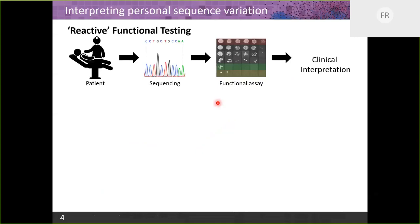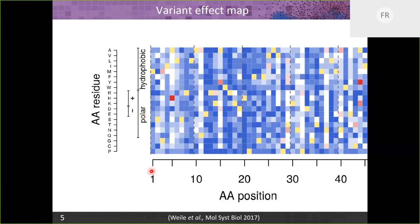The current paradigm is a patient comes into the clinic with a symptom, genetic testing is done, a variant is found, and then a functional assay is run. For all but a few genes there isn't really an established testing industry, and often this has to wait months and years until it's taken on as a research project. The idea is to make these maps ahead of time so that for each amino acid position, for each of the 20 amino acids, we measure every possible missense variant and get a score.